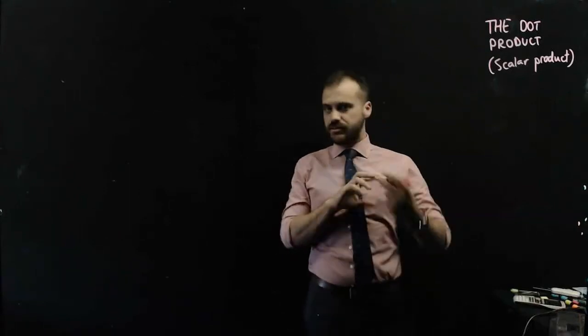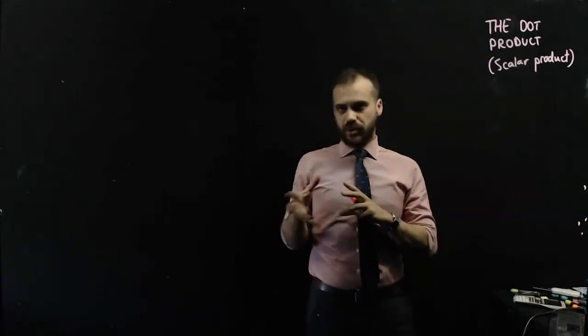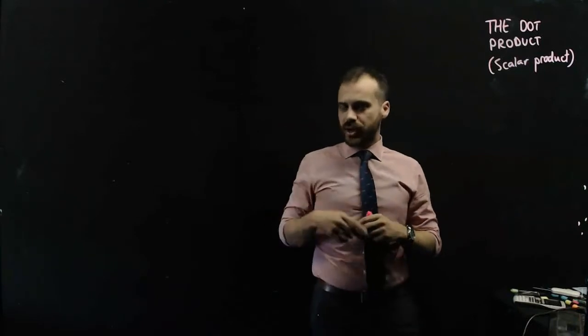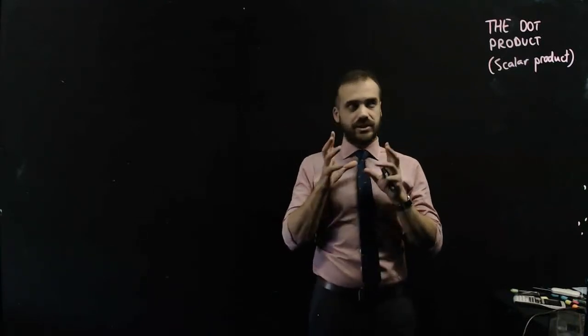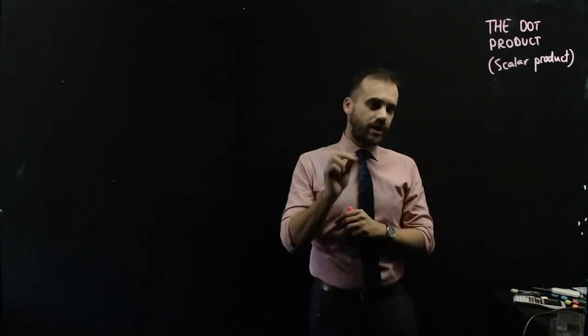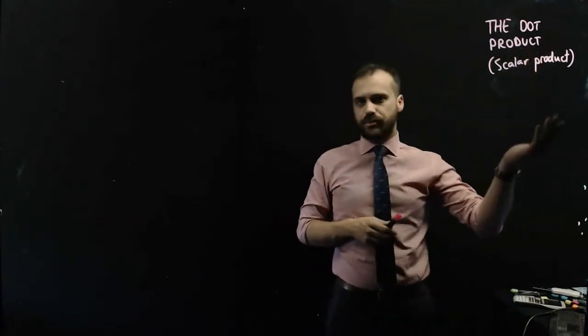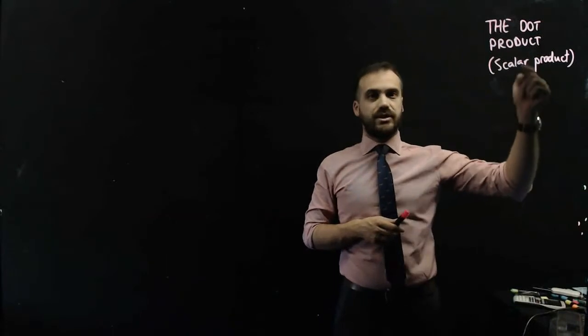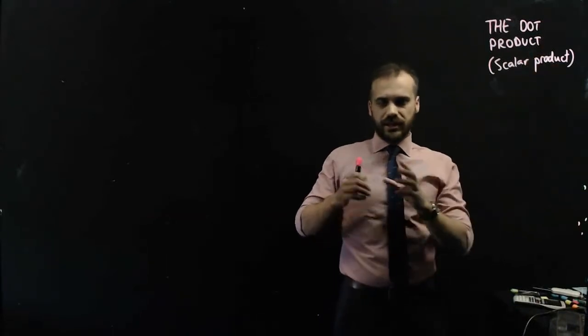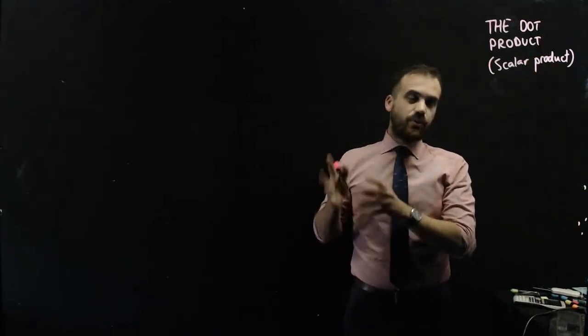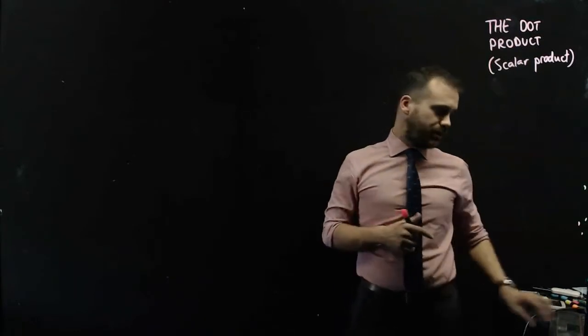So you've learned how to add vectors and subtract vectors, but what about multiplying vectors? There's actually two ways to multiply vectors, but in this video we're just going to focus on one of the ways. And it's called the dot product, sometimes it's called the scalar product, but these words mean the same thing. Dot product, scalar product. Let's jump straight into an example and see what the dot product is and how to calculate it.